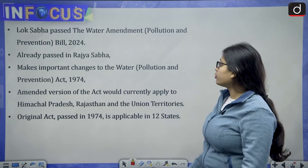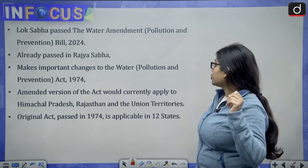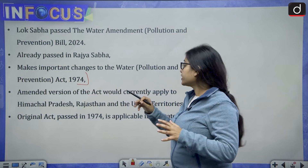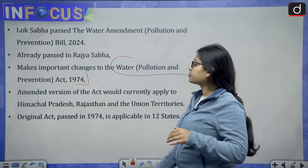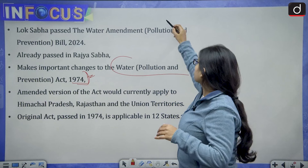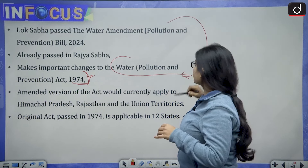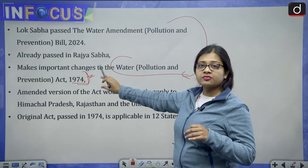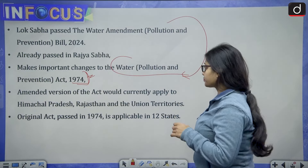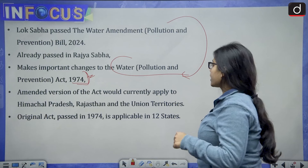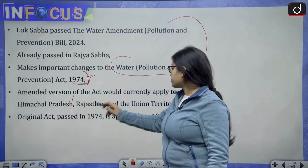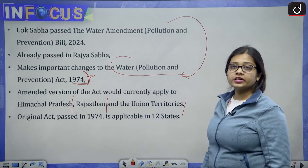The bill makes important changes to the Water Prevention and Control of Pollution Act 1974. The amended version of the act will currently apply to the states of Himachal Pradesh, Rajasthan, and the Union Territories.